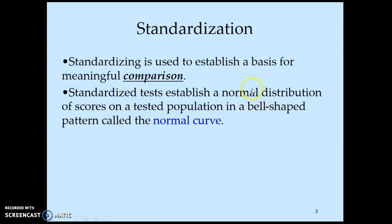When you look at standardizing a test, the main thing we're trying to do is establish a normal distribution on a bell-shaped normal curve. On your AP test, you never know what's going to be a 5, 4, 3, 2, or 1, because they take all the scores and distribute them into the bell curve. If you have a bunch of very smart students, you're going to score higher. On average, if you get 60% of the questions right on the AP psych test, you'll get a 3, and in some cases getting 75% right gets you a 4.